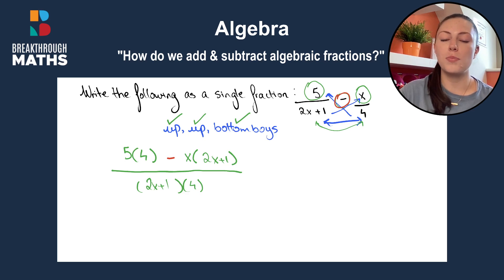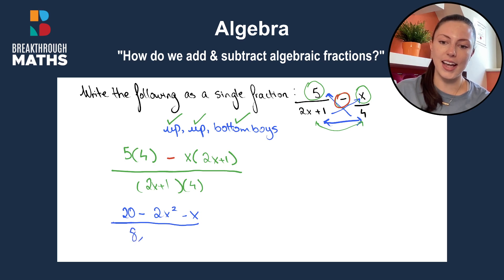Now we just multiply everything out. So five times four is 20 minus x by two x is two x squared and minus x by plus one is minus x. All over four by two x gives us eight x and four by one is plus four.